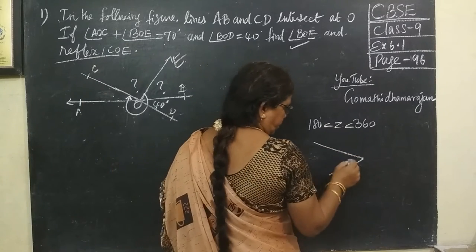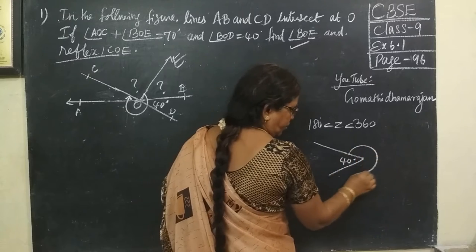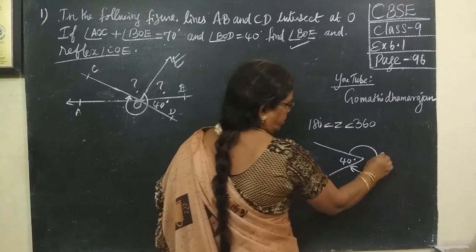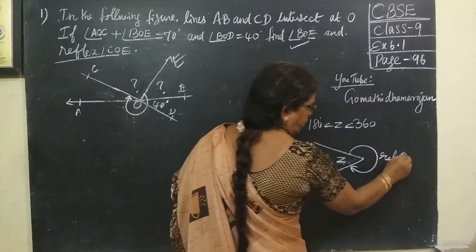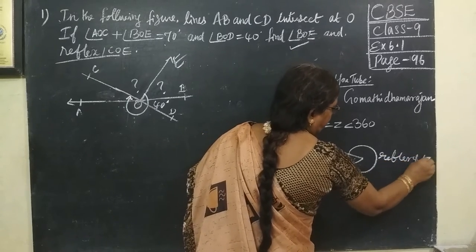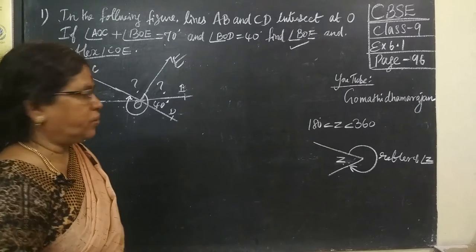Reflex angle lies between 180 to 360. So, suppose if it is 40 degrees, you know reflex angle means, here it is like this. This is reflex. Now, suppose if it is a jet means, this is a reflex of angle a jet. So, reflex angle is just to subtract from 360 degrees.